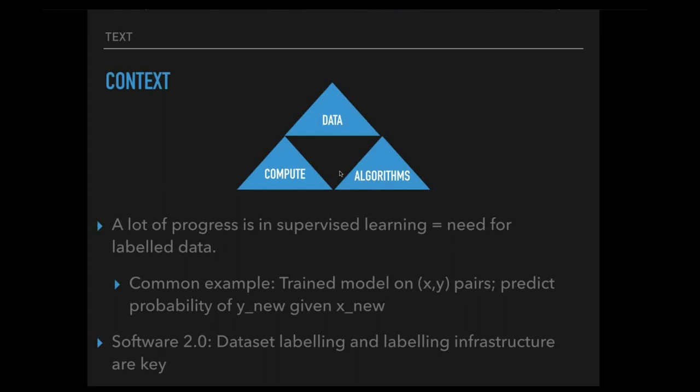It would be interesting to see where people are seven months into this — if you can rate yourself from zero (no knowledge) to ten (expert) in deep learning, that would help calibrate the presentation. Poll results are coming in: ones, fives, fours — a good enough spread to proceed.